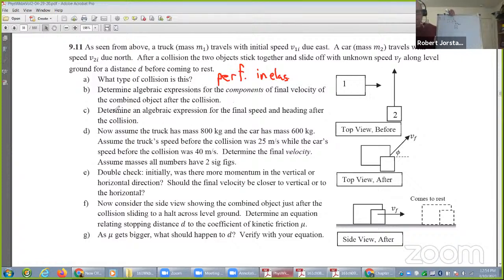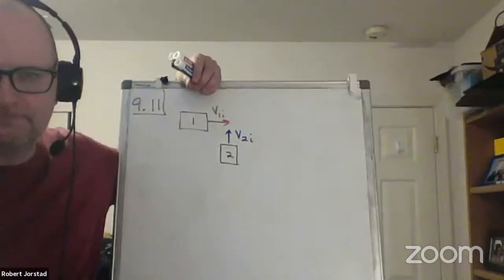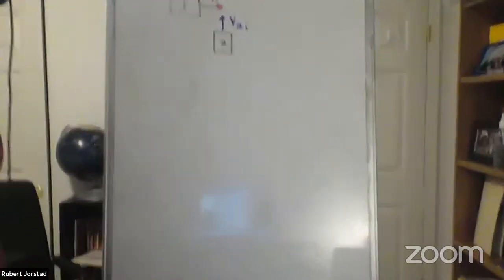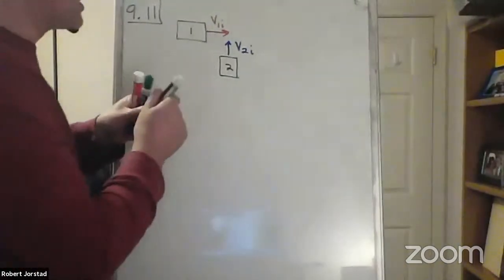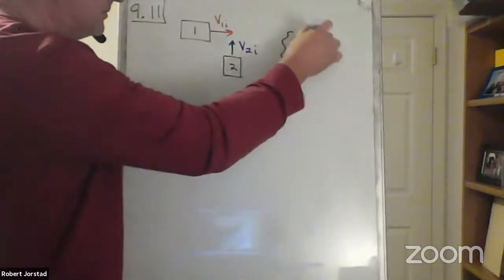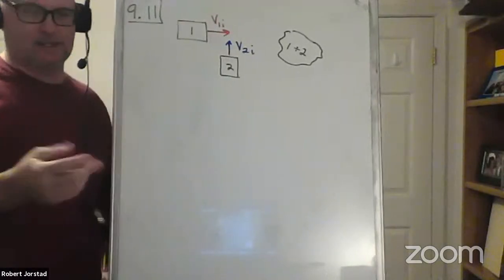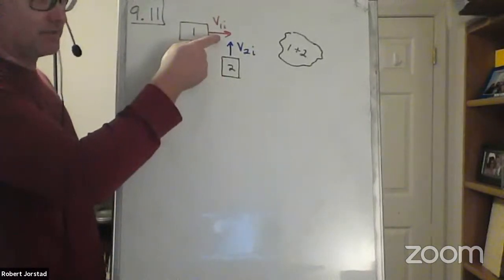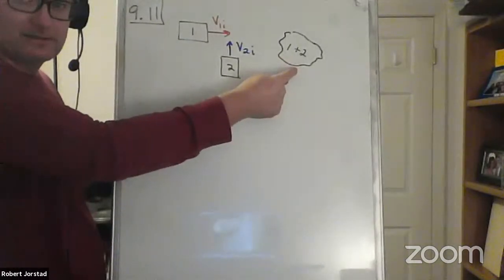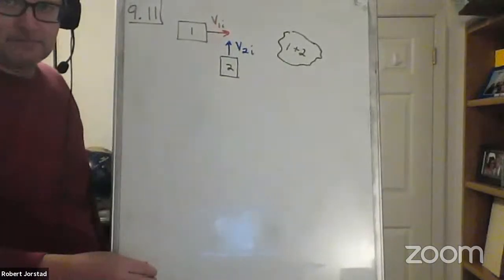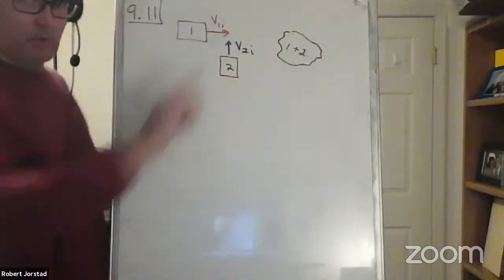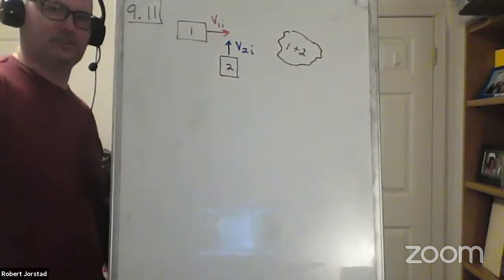What are we supposed to do? Get components. Afterwards, this thing's going to be one megablob — one plus two. If this one's moving up and that one's moving to the right, which way should this thing be moving? Diagonally to the right — some kind of direction here. Should it be closer to the x-axis or closer to the y-axis? If both velocities are equal, I guess we'd be at a 45-degree angle, and then depending on which velocity is bigger determines which way.